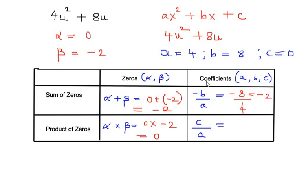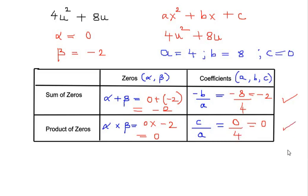We can see that the sum of zeros in terms of zeros and in terms of coefficients is the same: -2 = -2. This is verified. Now for the product of zeros in terms of coefficients: c/a = 0/4 = 0. The product of zeros in terms of zeros is also 0, so both are the same. This is also verified. Let us move on to the next part of this question.